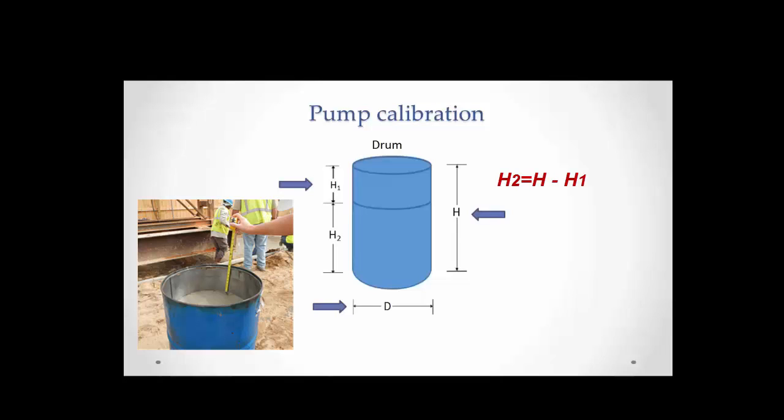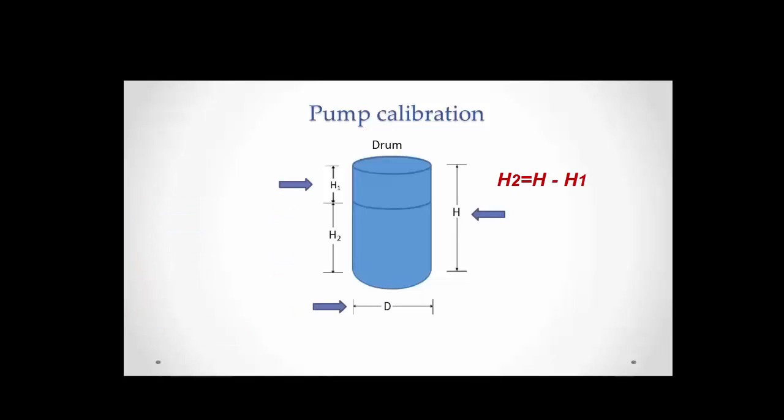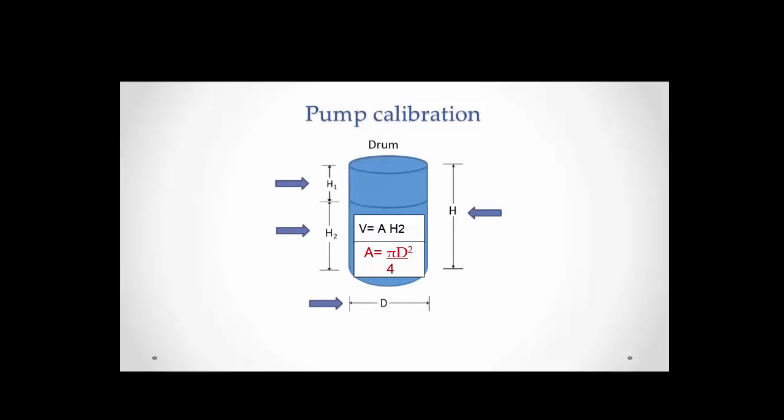Then we determine the height of grout by subtracting H sub 1 from H. We will compute the volume by multiplying the area of the circle of diameter D times the height H2 of the cylinder of grout. The area of the circle is pi D squared divided by 4, which is multiplied by H sub 2 to obtain the volume of grout pumped to the drum.